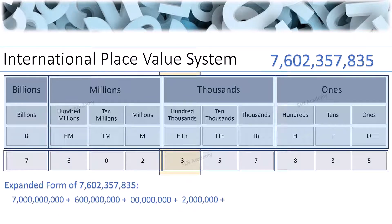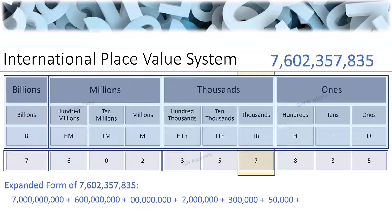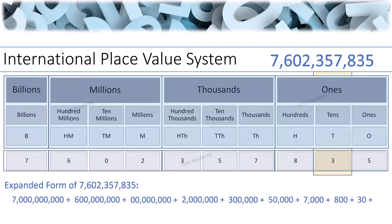Continuing the expanded form: 3 is in the Hundred Thousands position, so 300 thousand. 5 is in the Ten Thousands position, so 50 thousand. 7 is in the Thousands position, so 7 thousand. 8 is in the Hundreds position, so 800. 3 is in the Tens position, so 30. 5 is in the Ones position, so 5. The full expanded form equals 7,602,357,835.